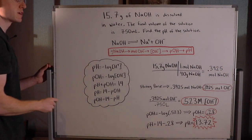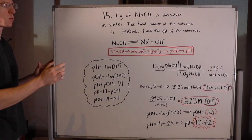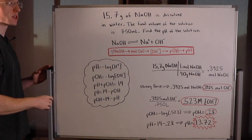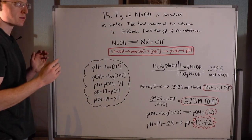In this problem, 15.7 grams of sodium hydroxide, NaOH, are dissolved in water. The final volume of the solution is 750 milliliters. Find the pH of the solution.